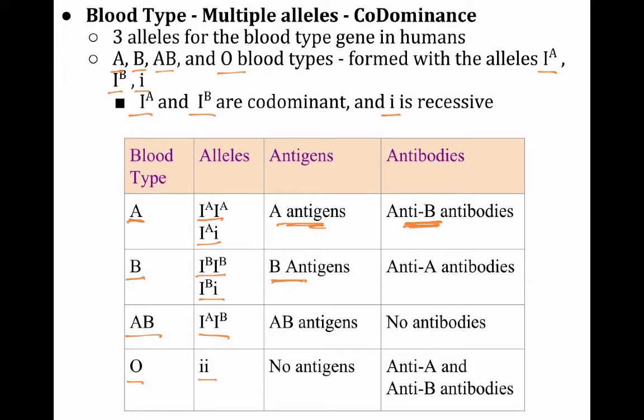If you have type B blood, you have B antigens, and your body makes anti-A antibodies. So the same thing is true for this, only in the reverse situation. If you try to give someone with type B blood type A blood, it's going to attack it, because it has antibodies that will target those A antigens. If you have type AB blood, you have AB antigens, and no antibodies.